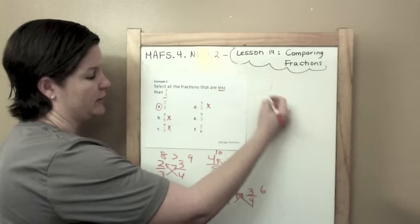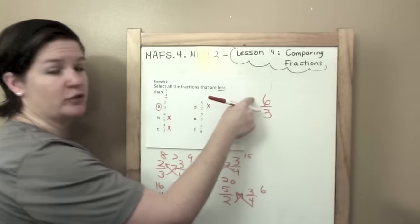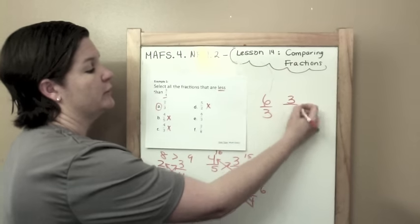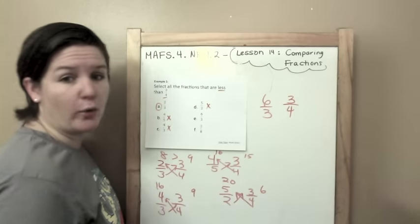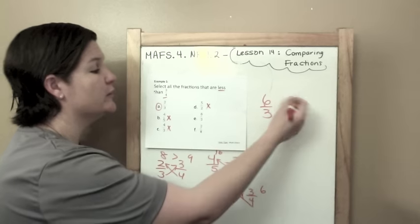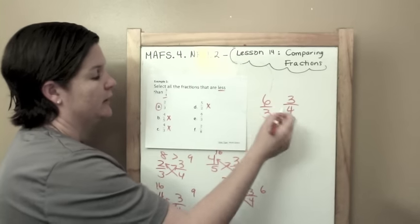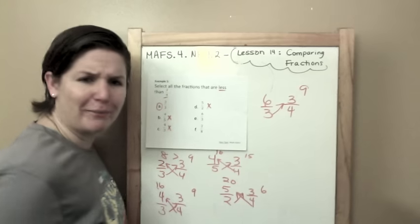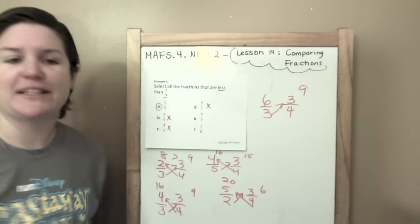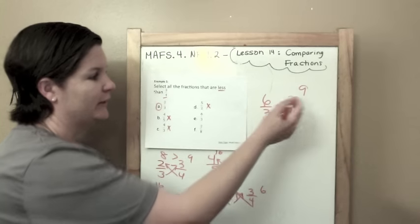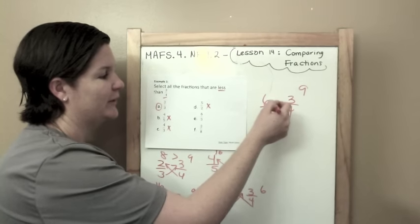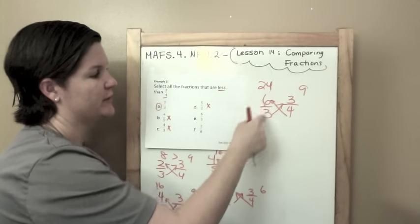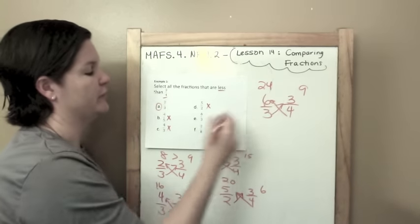Same thing here. 6 thirds. Numerator is greater than my denominator. So it's a fraction greater than 1. 3 fourths is part of a whole. It is not greater than 1 so I know that this is going to be less. 3 times 3 is 9. Do you guys hear that bird? There's a bird outside. 4 times 6 is 24. So 6 thirds is greater than 3 fourths.